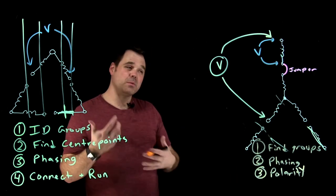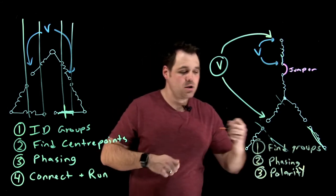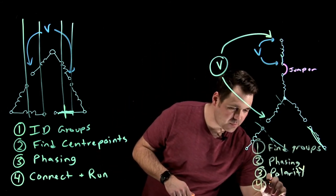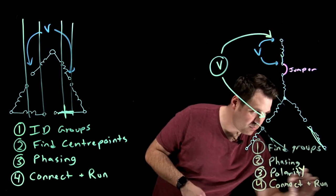And then once we've determined polarity, now we can throw in all our terminal identification numbers. My fourth step, same as before, is just to connect and run.